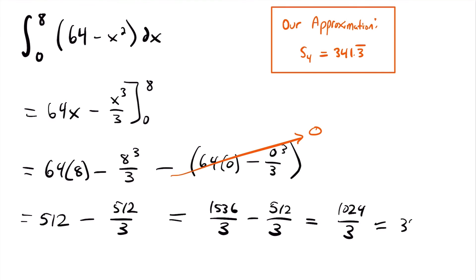This equals 341.3 repeating — the actual value of the area underneath this function from 0 to 8. Simpson's rule got us the exact value here. Simpson's rule is an even better approximation than the trapezoidal rule, the midpoint rule, and left and right Riemann sums. It won't always give the exact value, but you can expect the approximation to be very close to the actual area.